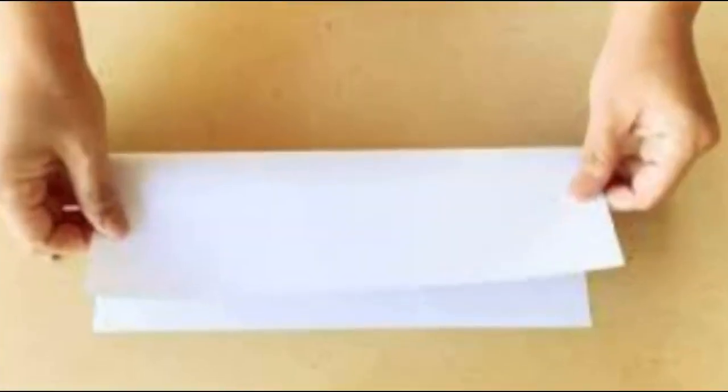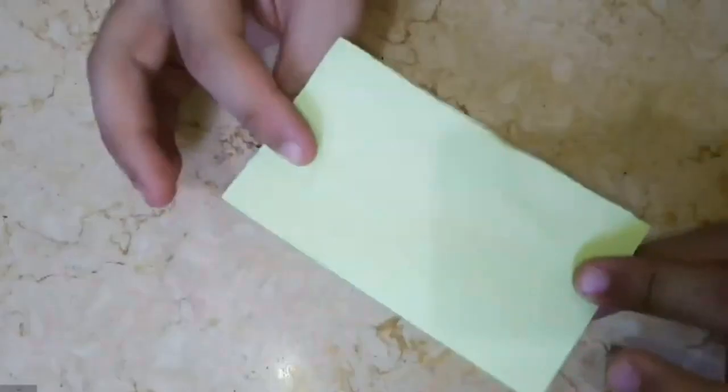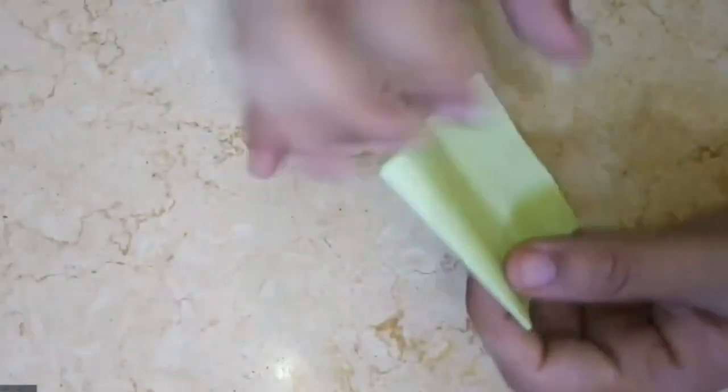The magician starts by showing the audience a regular piece of paper, ensuring that it appears normal and unaltered. They fold the paper in half, creating a crease down the middle, and then fold it in half again, resulting in a smaller folded rectangle.